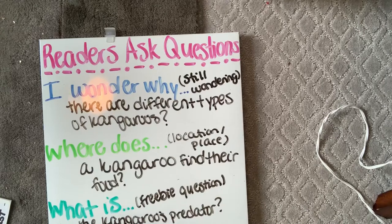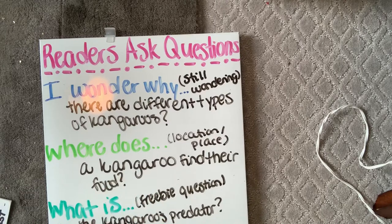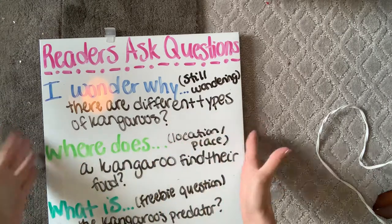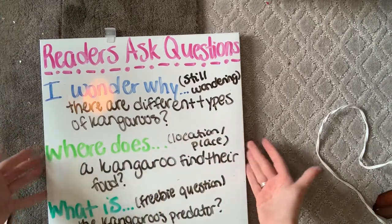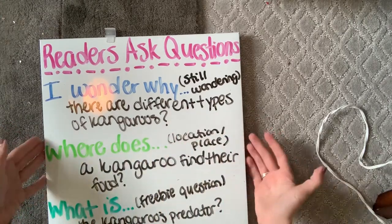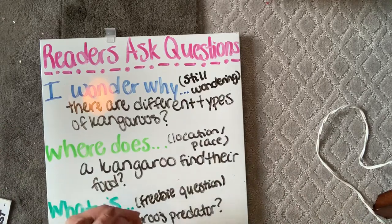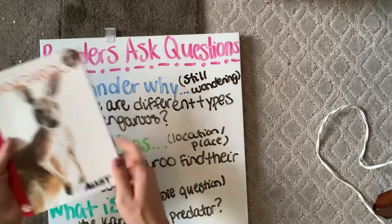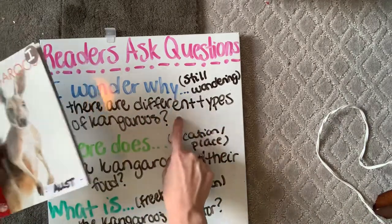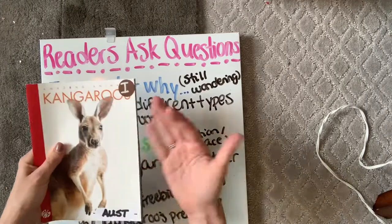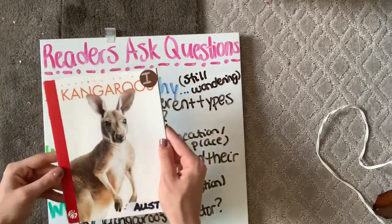They talked about how kangaroos had lookouts and how they traveled in big groups so that they were safe, but what were they being safe from? They didn't really talk about that — so that's what I want to know. Readers ask these questions to help us further our research. So if I was writing a report or making a project about kangaroos, these are questions after reading this book that I still might want to ask to add to my project.